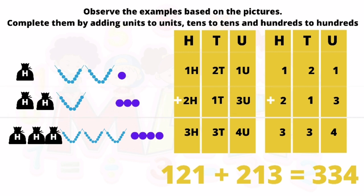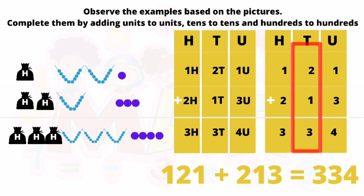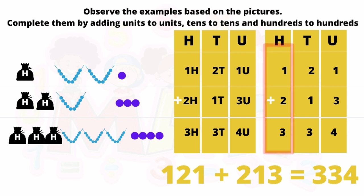Now if we set up the hundreds, tens, and units columns and write the respective numbers below them, we can carry out the addition. Under hundreds: one; under tens: two; under units: one. Plus under hundreds: two; tens: one; units: three. Beginning from the units column — one plus three is four units; two plus one is three tens; one plus two is three hundreds. So the answer is 334.